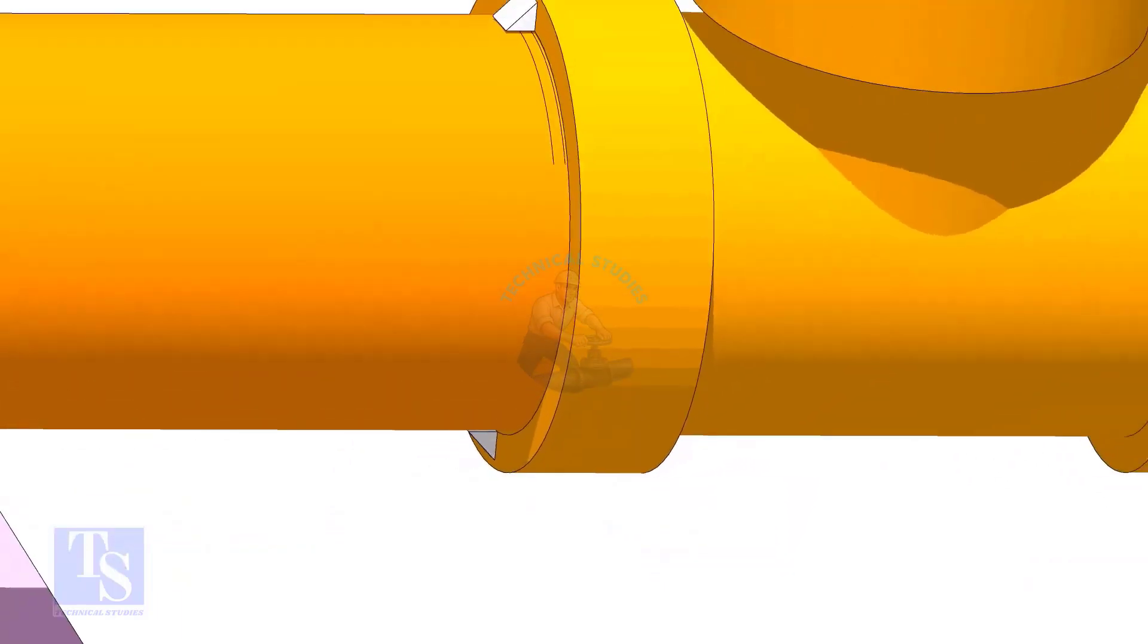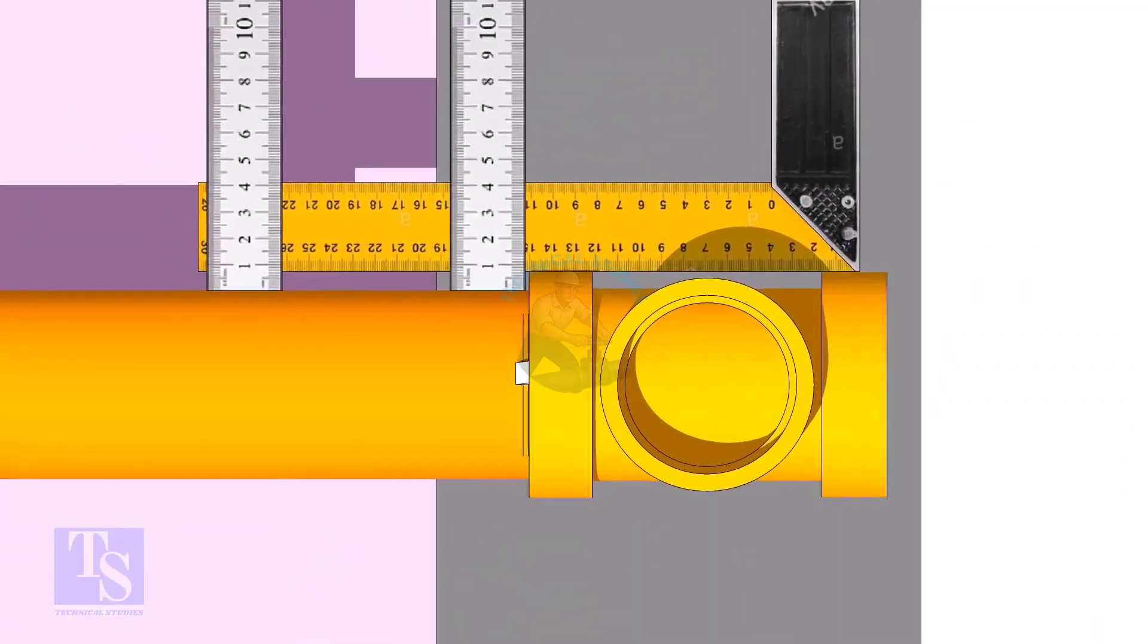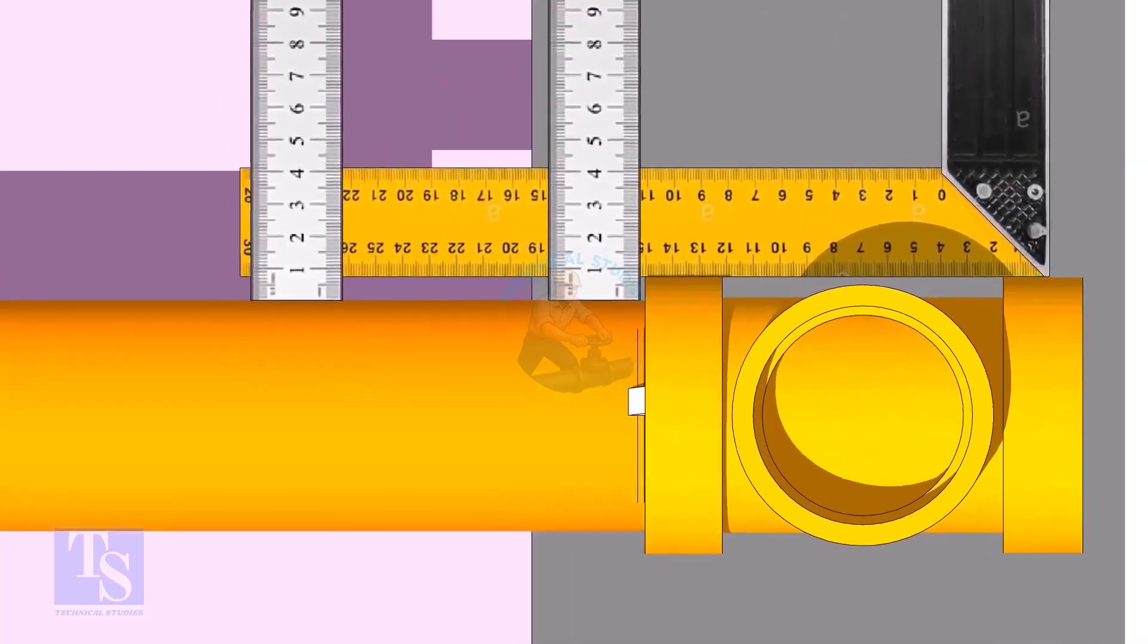Now correct the side of the tee. Tack weld on both sides.